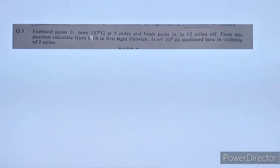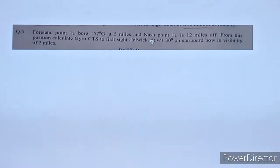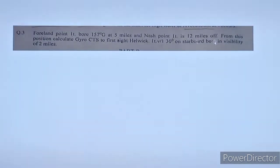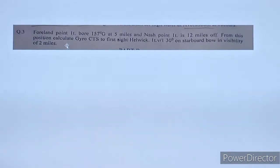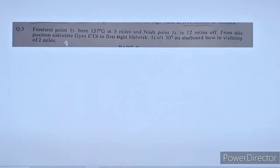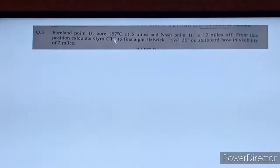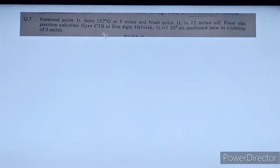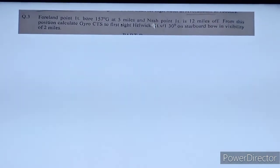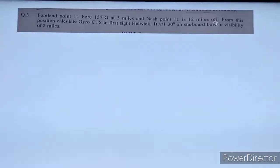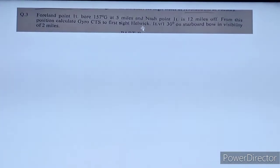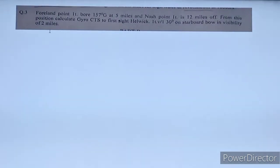Question 3: Four Land Point light bore 157 gyro at 5 miles, and the next point light is 12 miles off. From this position, calculate the gyro CTS to first sight Helvick light vessel 30 degrees on the starboard bow in a visibility of 2 miles. Since gyro error is not given, we consider the bearing as true — so 157 is true and 5 miles off. Visibility is given, so we need to calculate GR and LR values.